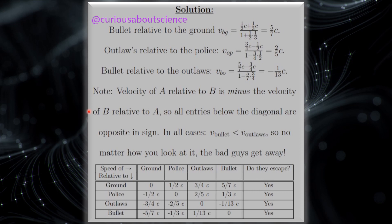So all entries below the diagonal are an opposite sign, but in all cases, the velocity of the bullet is less than the velocity of the outlaws. So no matter how you look at it, the bad guys get away.